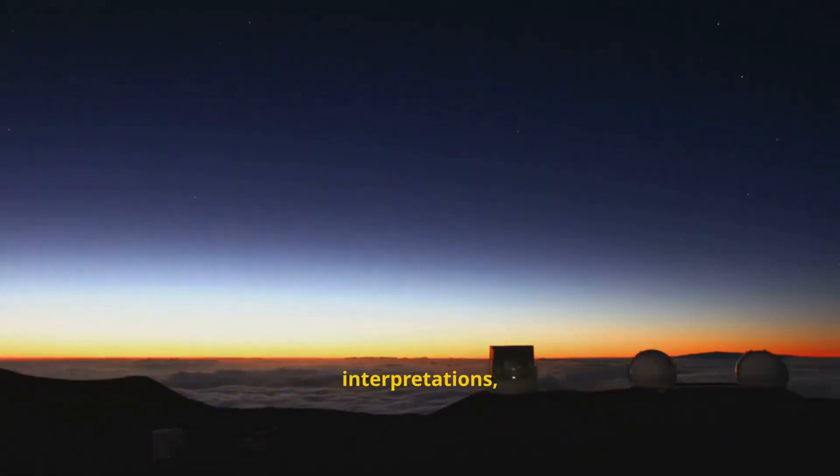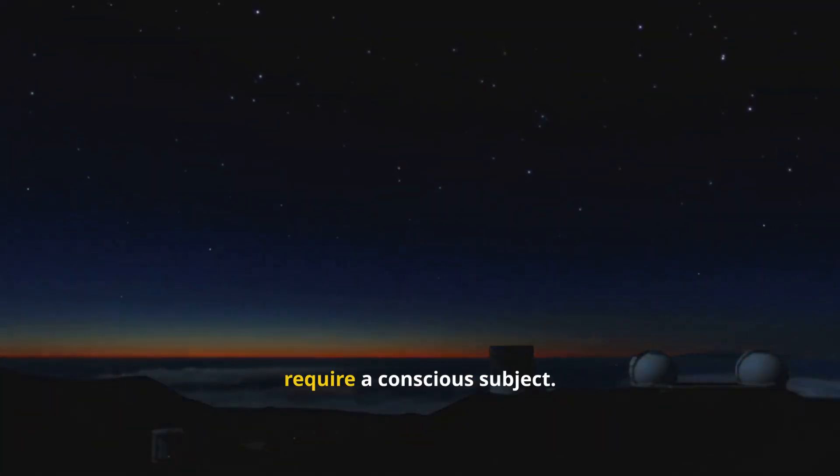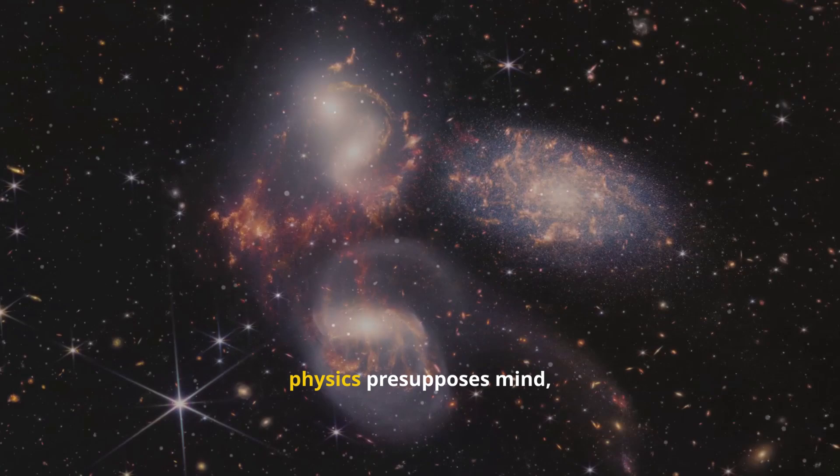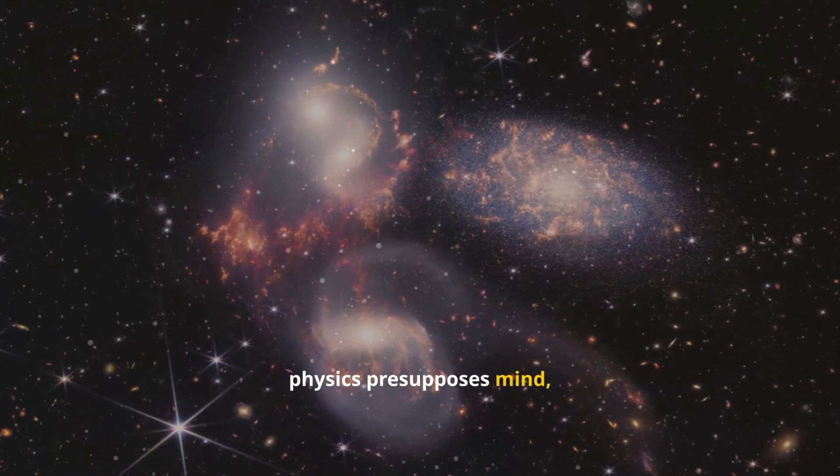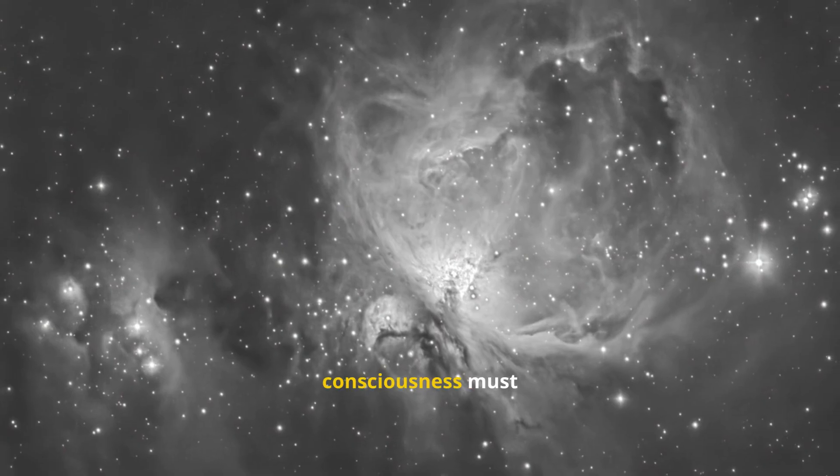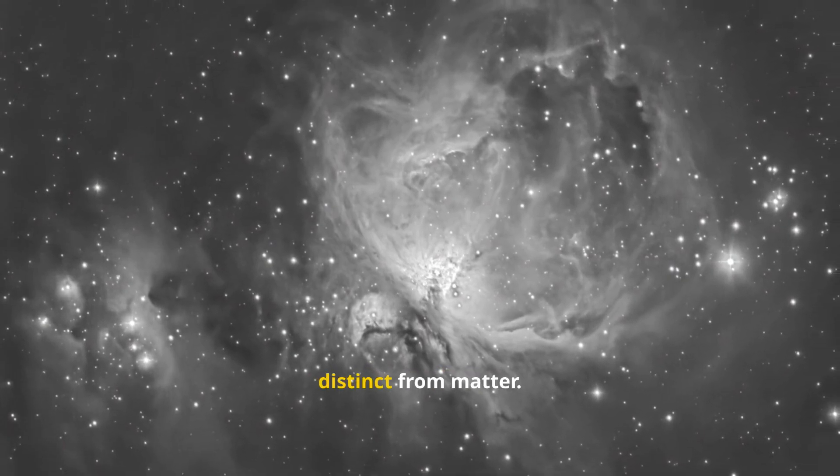Observations, interpretations, measurements, all require a conscious subject. This creates a profound asymmetry. Physics presupposes mind, but cannot explain it. For Wigner, this meant consciousness must be ontologically distinct from matter.